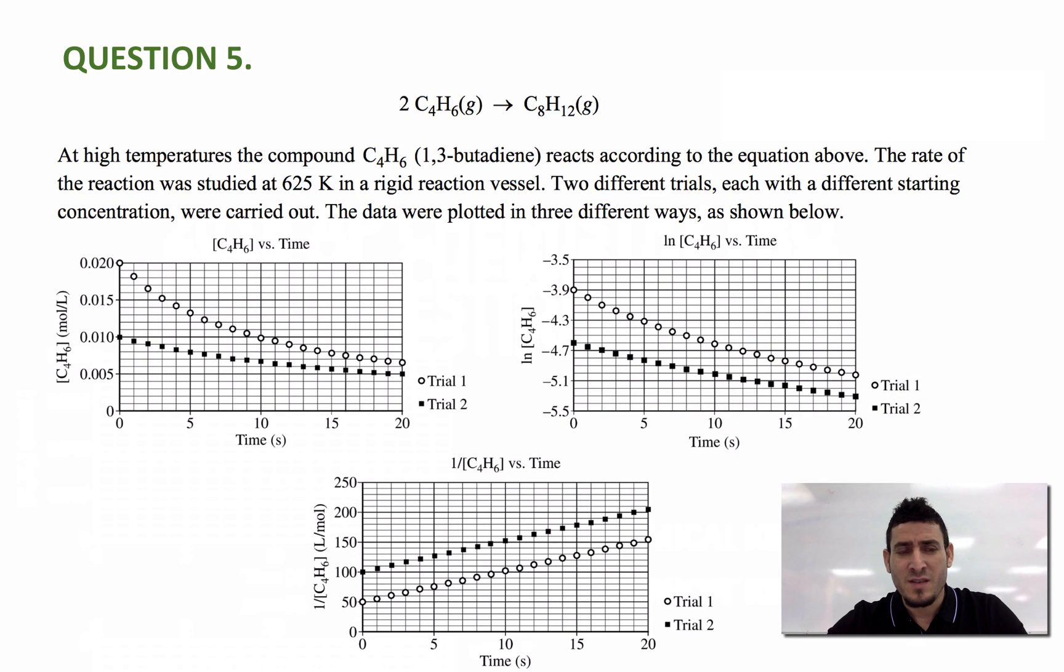The question says at high temperatures the compound C4H6 reacts according to the equation above, so I have 2 C4H6 gas gives C8H12 gas. The rate of the reaction was studied at 625 Kelvin in a rigid reaction vessel.